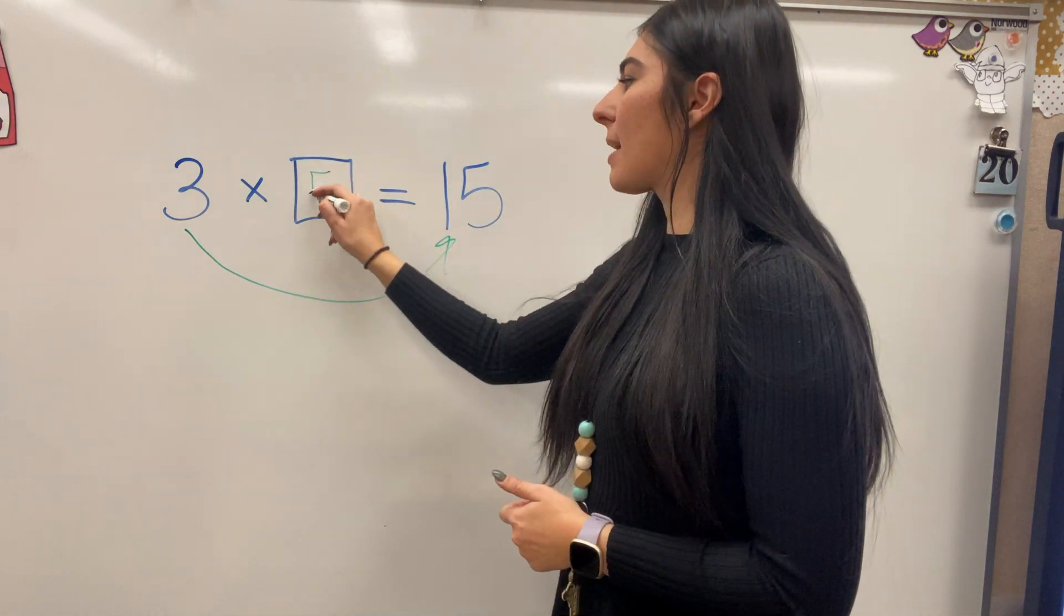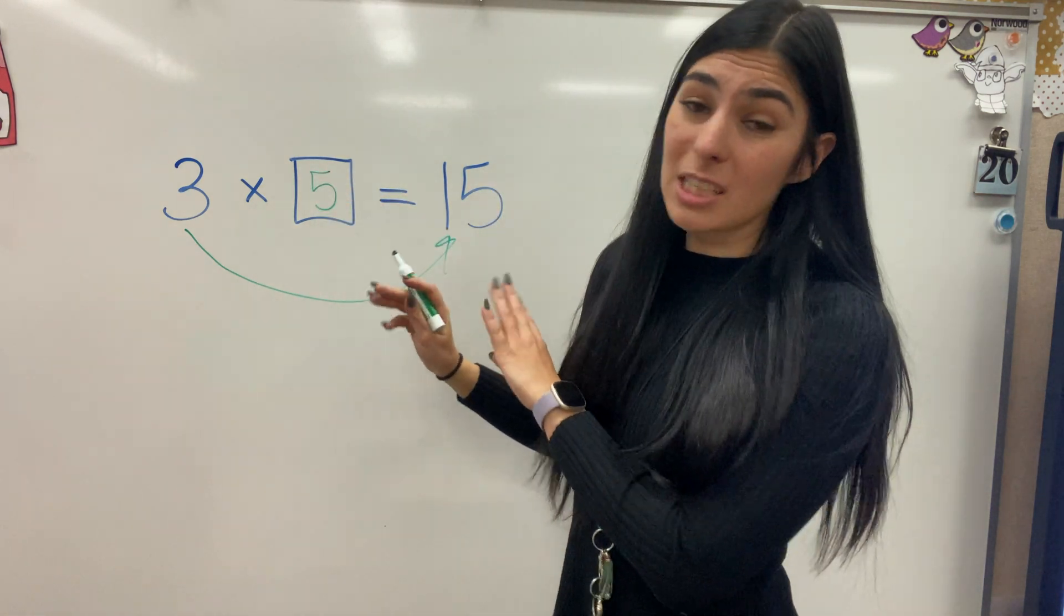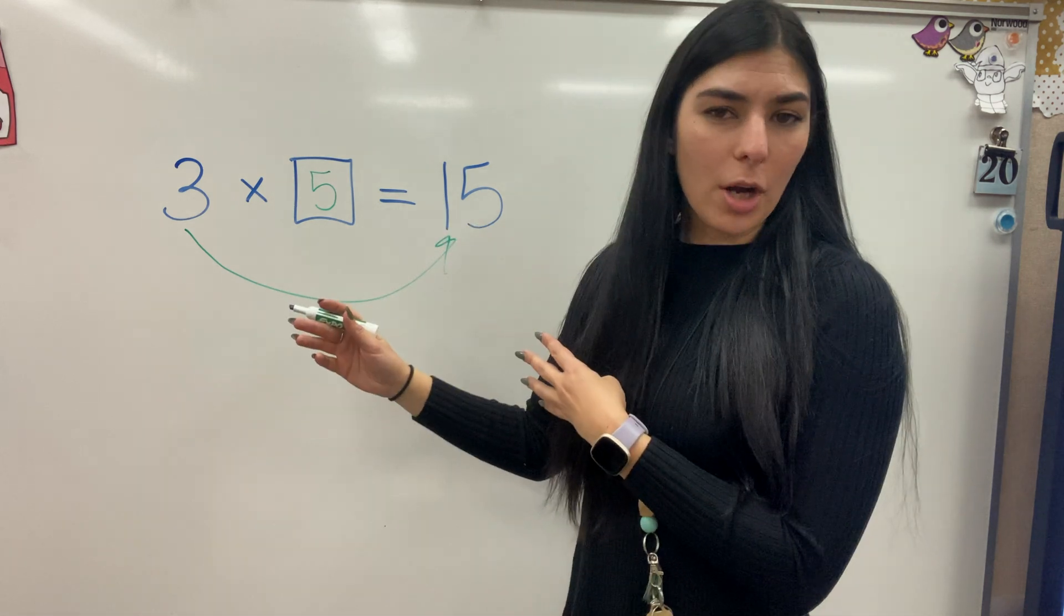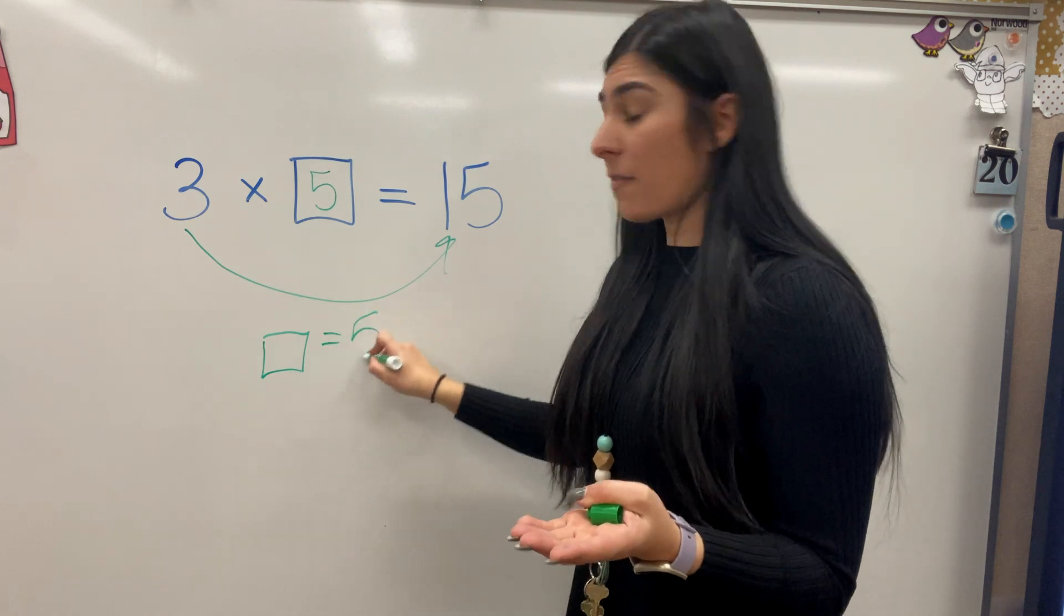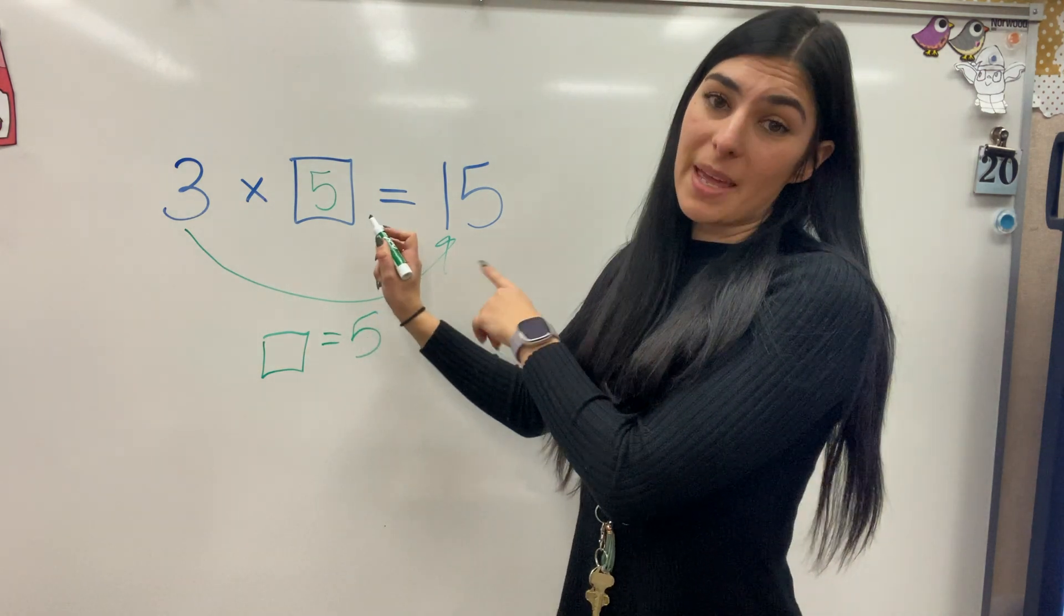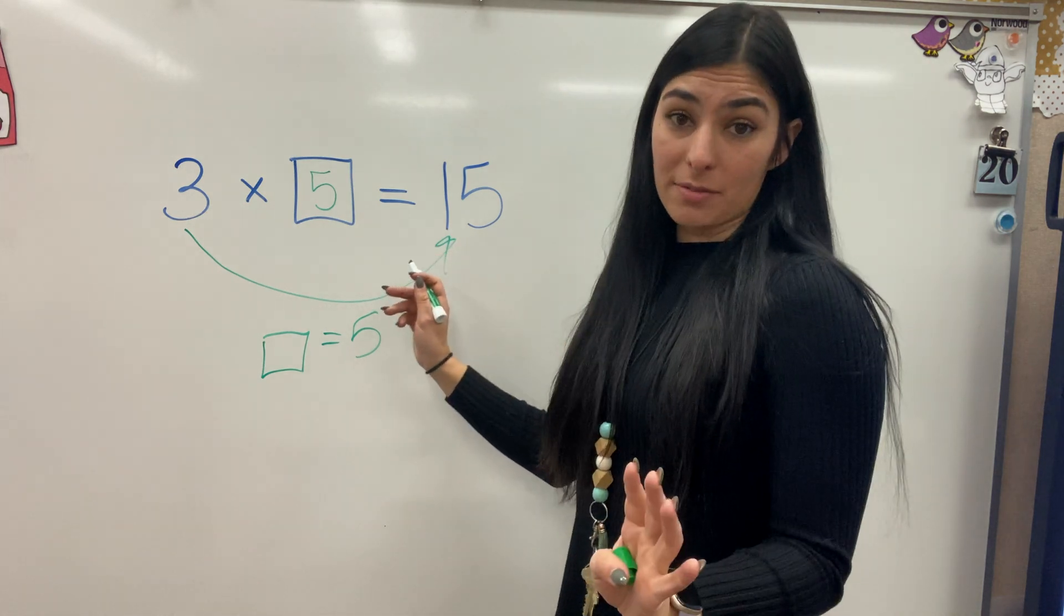That means 5 can go in my missing box. Now remember, this box can be anything. It can be a missing box, star, octagon. My key would essentially be square equals 5. So I know if I plug this in up there, the equation will work. This can also be any sort of letter.